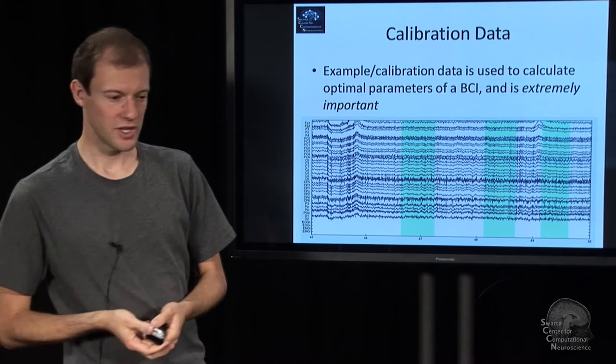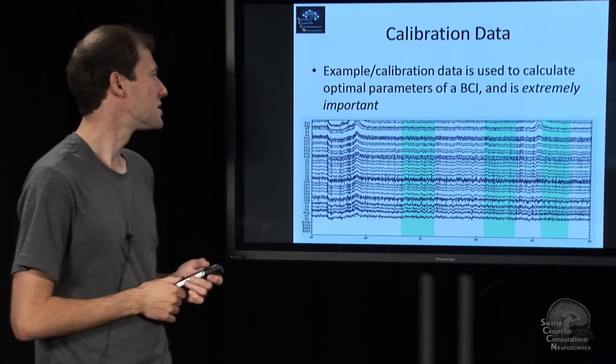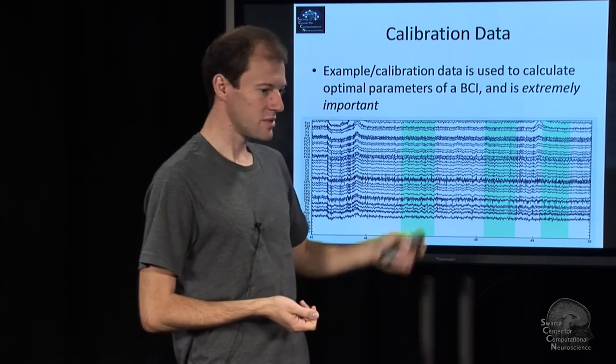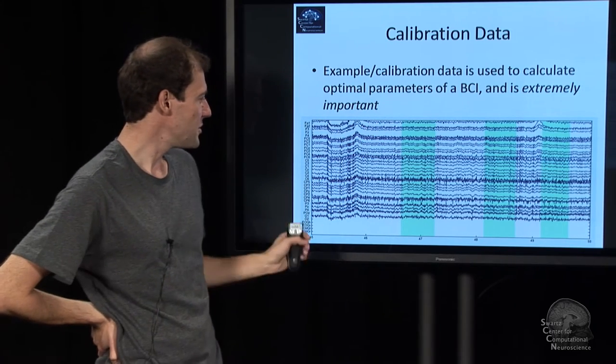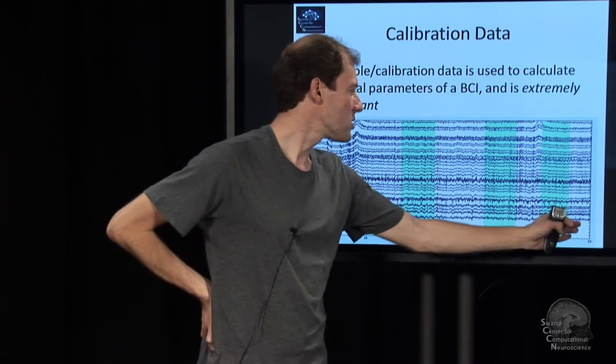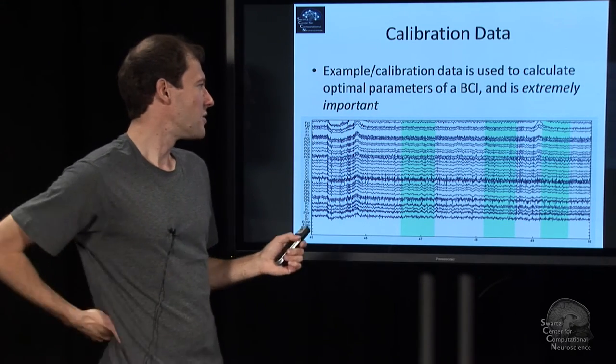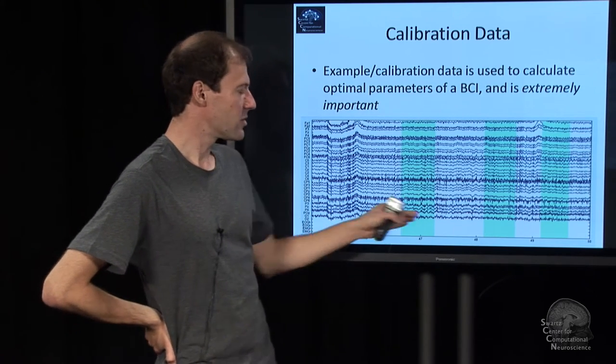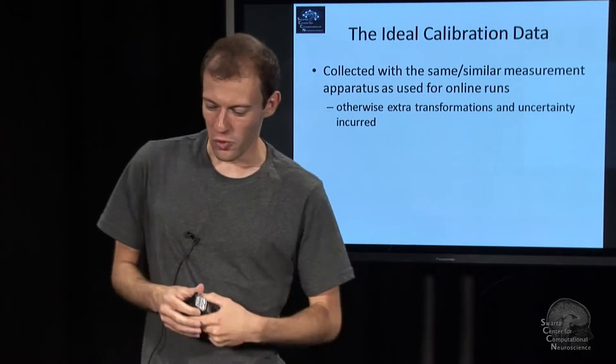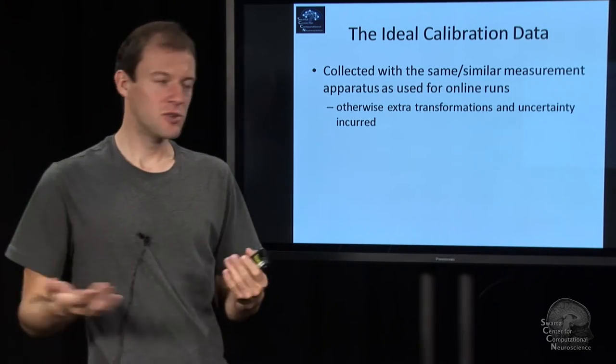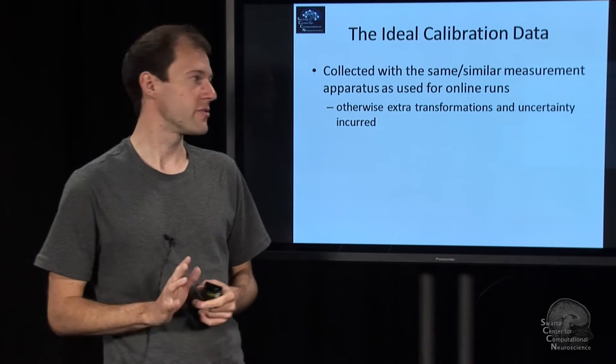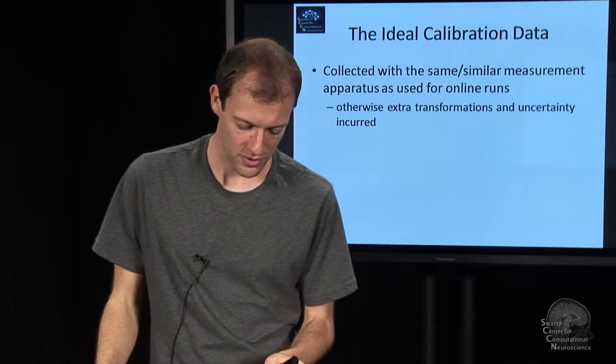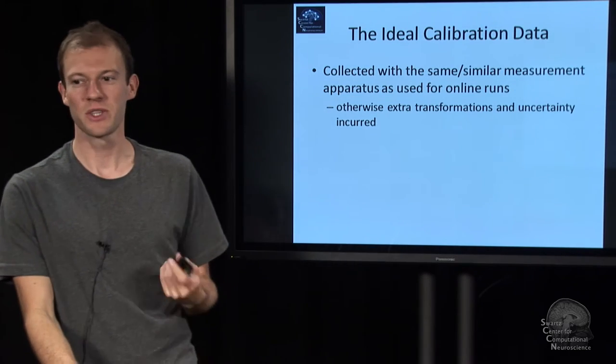But then there's another class of data. That is what we call primarily calibration data and example data. That is actual exemplar EEG of a person. In many cases, it is annotated with useful information that we need to deduce these parameters. That is a very powerful source of information. We will talk about how to use that. First and foremost, we need to discuss what properties that data needs to exhibit.